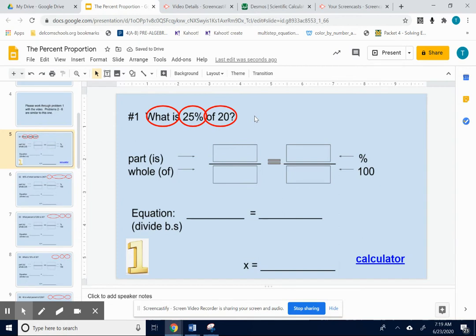See, I want you to see that the is is right next to the word what. The percent is right after the number 25. And the 20 is right after the word of. So that kind of gives you a clue as to where the numbers go.